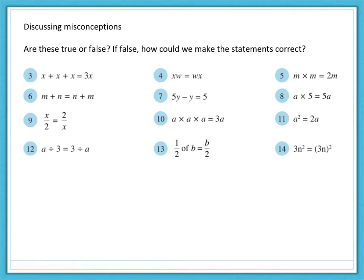Now, how many of these did you get correct? So, question three, x plus x plus x is indeed 3x, so that is true. Number four, x multiplied by w is the same as w multiplied by x, so that is true. Multiplication is commutative. We can do that in any order.